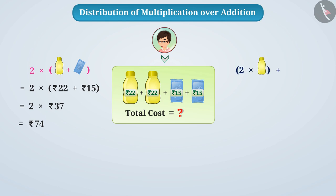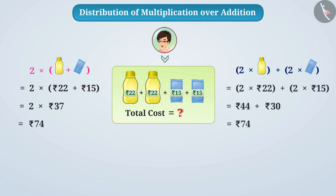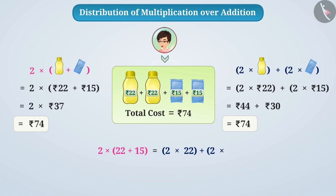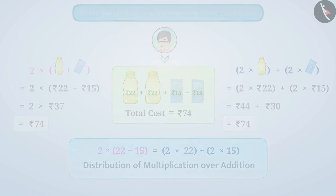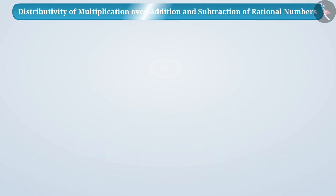In both cases you will get the same result. We can say that 2 multiplied by (22 plus 15) is equal to 2 multiplied by 22 plus 2 multiplied by 15. Here, the distribution of multiplication over addition is done. Multiplication can also be distributed over addition in rational numbers.